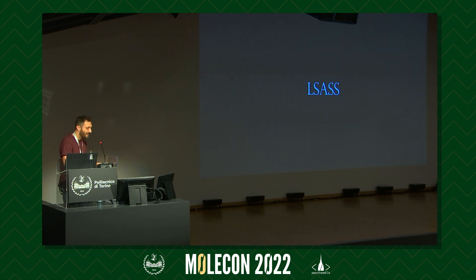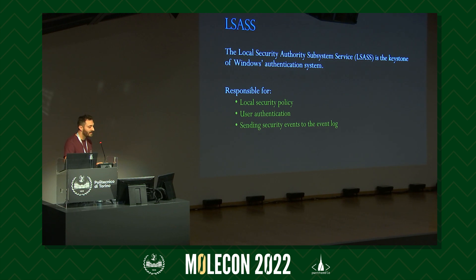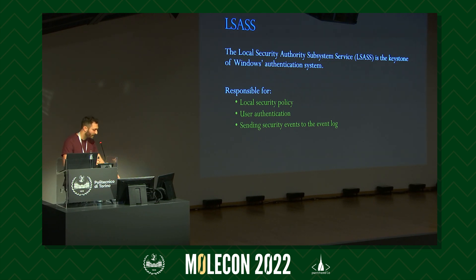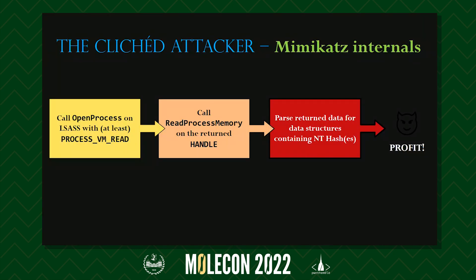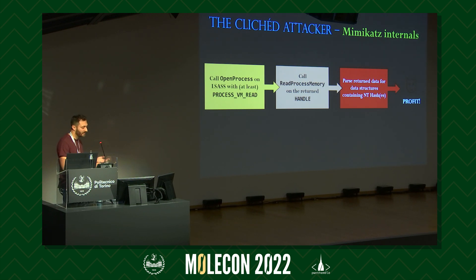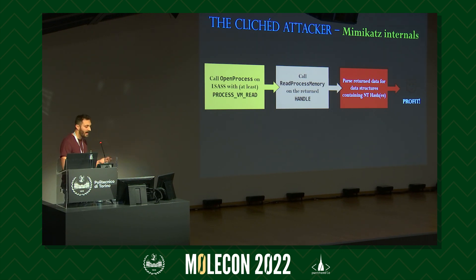Let's move to a topic that may not seem immediately relevant to protected process, but please bear with me. In Windows, LSASS is the keystone of the Windows authentication system — responsible for user authentication, enforcing security policy, and handling password changes. It's no surprise that attackers want to dump cached passwords from the LSASS process. One of the most common TTPs in today's landscape is for an attacker to land a shell, upgrade privileges to local admin, and then run Mimikatz to dump credentials out of LSASS.